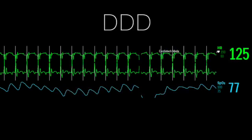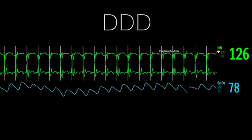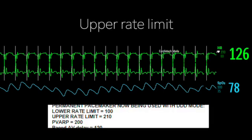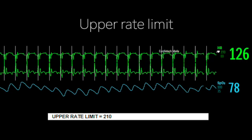The patient is in complete heart block and DDD paced, meaning the pacemaker is sensing the patient's own P waves, then pacing the ventricle after this, since the signal can't get through due to the block. One of the settings on the pacemaker is going to be the upper rate limit, or the maximal tracking rate — essentially the highest rate the pacemaker will pace at.